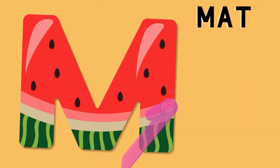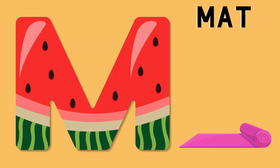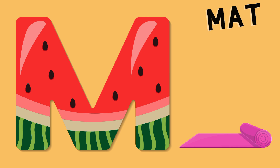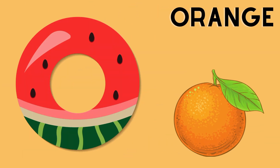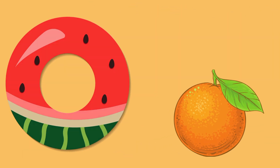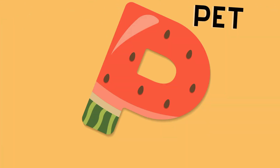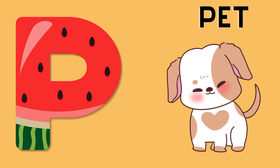M is for mat, m-m-mat. N is for net, n-n-net. O is for orange, o-o-orange. P is for pet, p-p-pet.